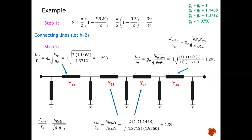Step one: calculate the beta value. We are given that the fractional bandwidth is 0.5. Substituting into the formula, beta equals (π/2) × (1 − 0.5/2) = 3π/8. So beta = 3π/8. With step one complete, we are ready to proceed to steps two and three to obtain the admittances of the connecting lines.